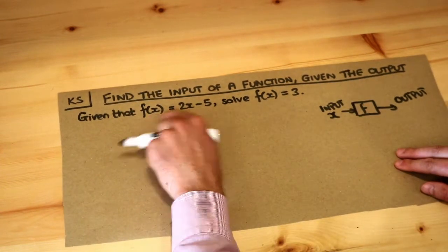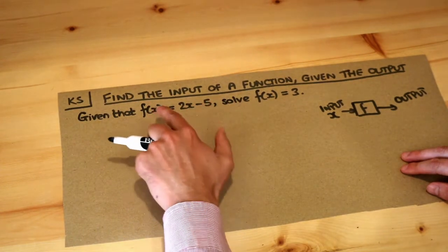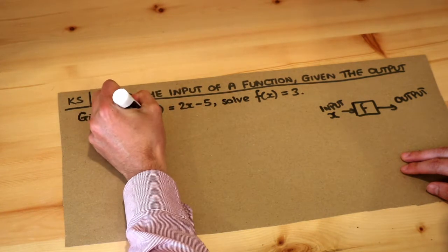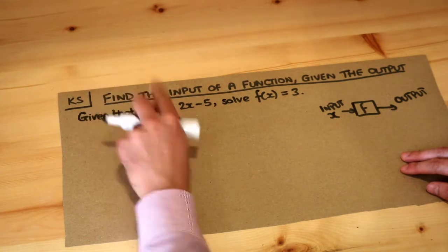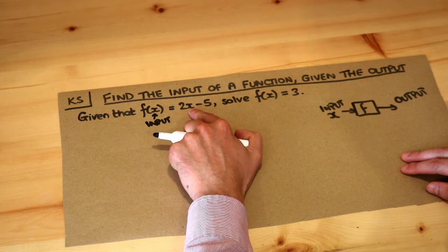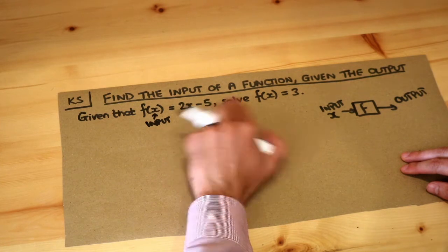In this particular case, f(x) = 2x - 5. That's basically saying if the input of your function is some number x, the output will be 2 times x, so 2 times the input, minus 5.